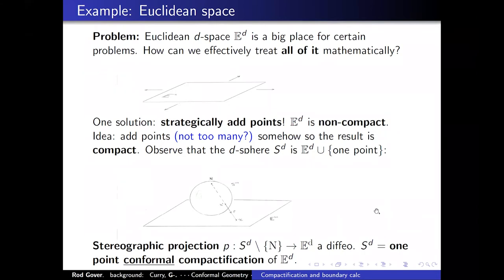Another key feature of stereographic projection is that it is conformal: the mapping preserves angles. It obviously doesn't preserve lengths, but it preserves angles. So it's a really good compactification in the sense that it preserves most of the information about the metric.